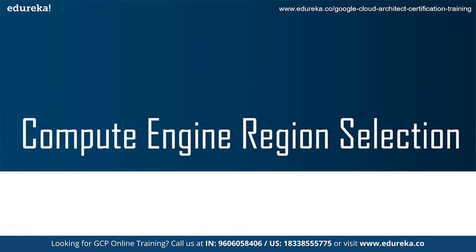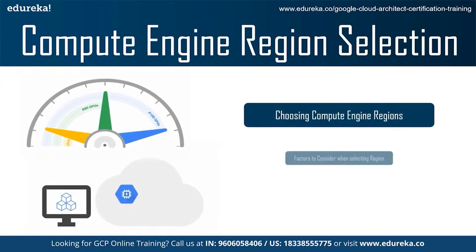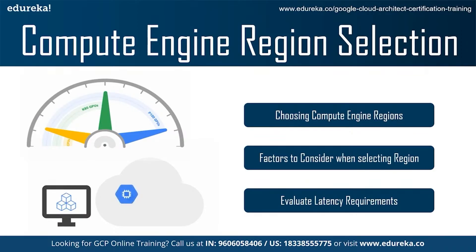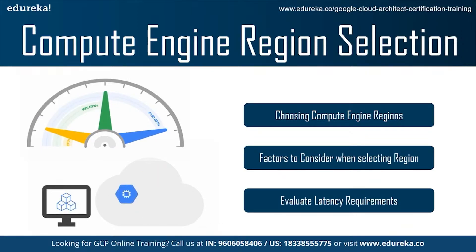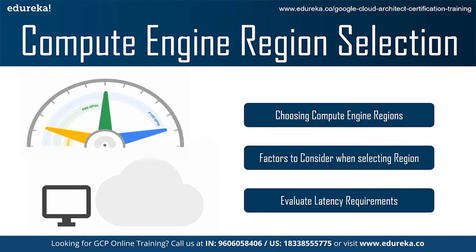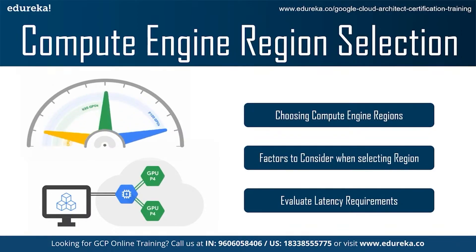For compute engine region selection, decide early in the architecture phase how many and which regions to use, as this can affect app architecture, pricing, and data synchronization. Moving an app between regions is cumbersome and sometimes costly, so it should be avoided once the app is live. Key factors to consider include: latency — affected by caching and load balancing, especially critical for enterprise use cases with on-premises systems; and price — Google Cloud resource costs differ by region. Tools for estimating prices include Compute Engine pricing, pricing calculator, Google Cloud SKUs, and the billing API.